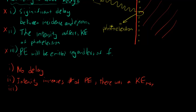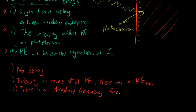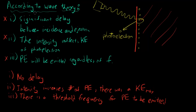And thirdly, the idea that photoelectrons emitted will be emitted regardless of frequency - this was false again, because there was a threshold frequency. There was a minimum frequency for the photoelectrons to be emitted at all. So there is a threshold frequency for photoelectrons to be emitted. So we can see that all the postulates that the wave theory would state are all false.